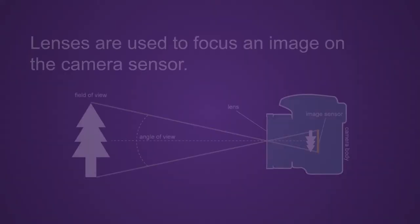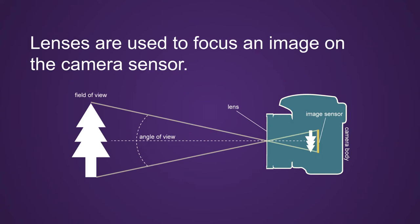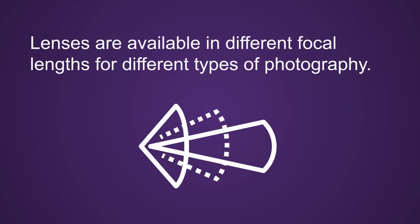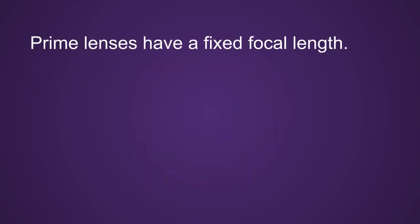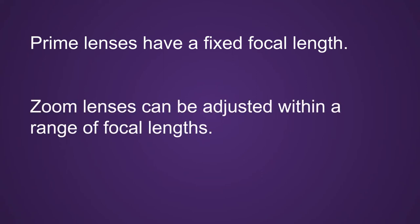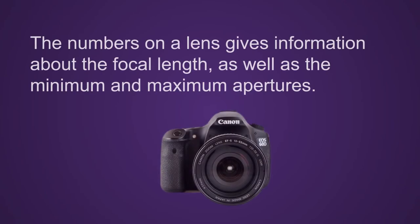To recap: lenses are used to focus an image on the camera sensor and are available in different focal lengths for different types of photography. Focal length is the distance between the lens and image sensor, measured in millimeters. Prime lenses have a fixed focal length, while zoom lenses can be adjusted within a range of focal lengths. The numbers on a lens give information about the focal length as well as the minimum and maximum apertures.